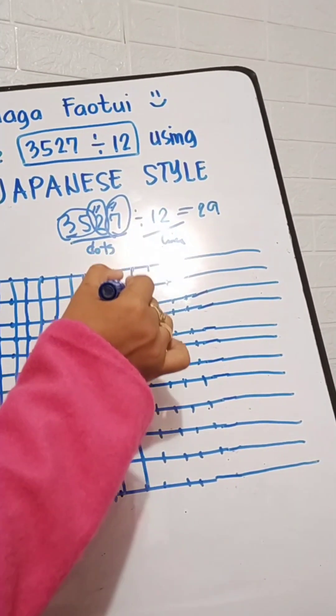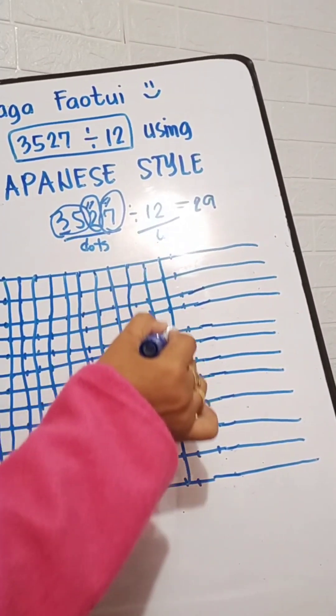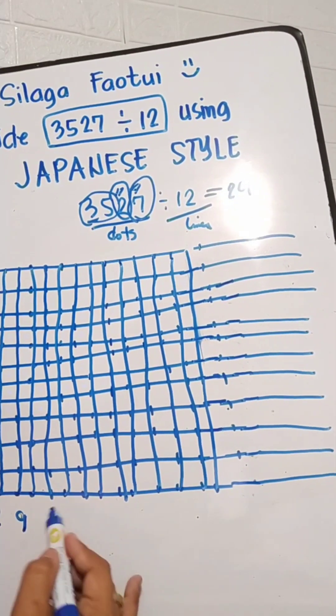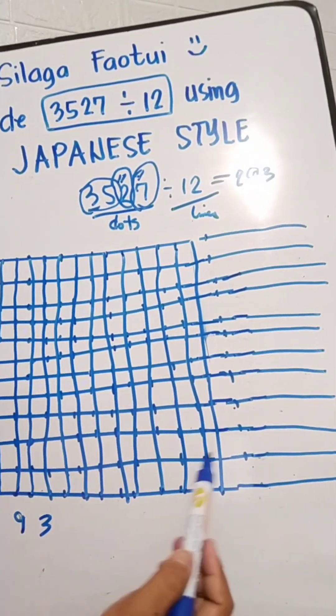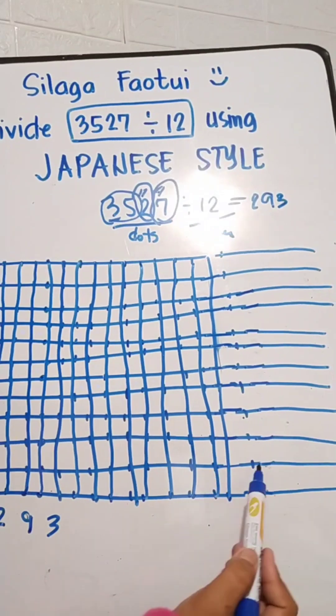So now let's connect the dots. 1, 2, and 3. So we have 3 lines formed. And now what's remaining would be your remainder. So let's count. 1, 2, 3, 4, 5, 6, 7, 8, 9, 10, 11.